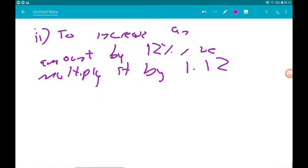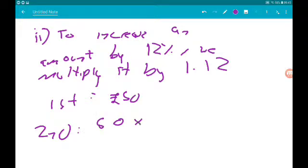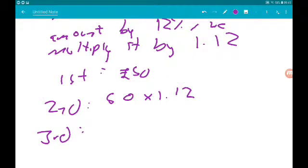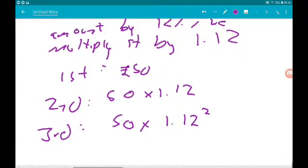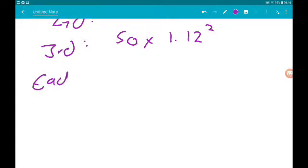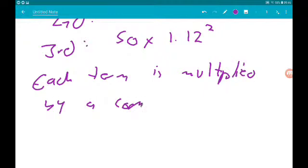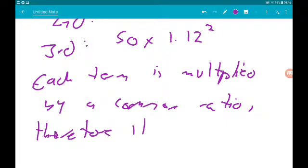So Baraka, in the first month saves 50 pounds. Second month is 50 times 1.12. Third month would be 50 times 1.12 squared. For example, so each term is multiplied by a common ratio. Therefore, it's geometric. Cool.